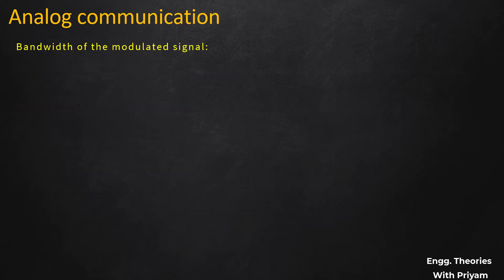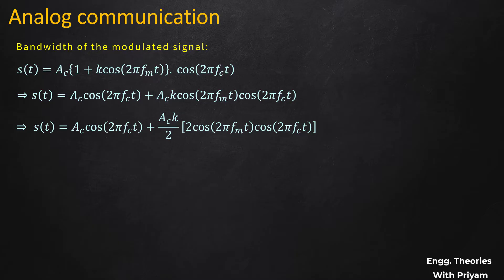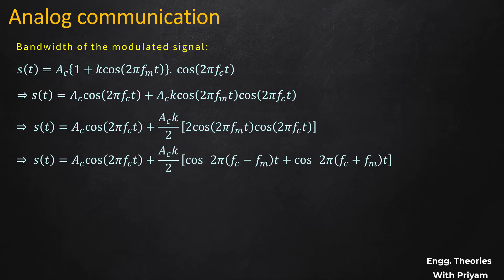For the bandwidth of the modulated signal, from Equation 1: s(t) = Ac·cos(2π·fc·t) + Ac·(k/2)·[2·cos(2π·fm·t)·cos(2π·fc·t)]. Using the identity 2·cosA·cosB = cos(A−B) + cos(A+B), this becomes s(t) = Ac·cos(2π·fc·t) + (Ac·k/2)·{cos[2π·(fc − fm)·t] + cos[2π·(fc + fm)·t]}. This is Equation 8.